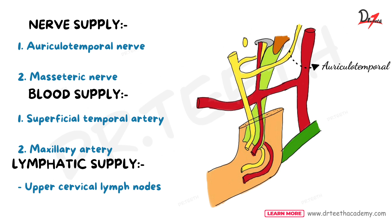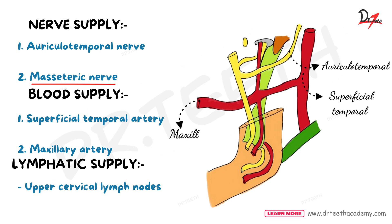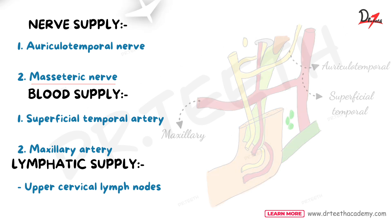Regarding nerve supply, blood supply, and lymphatic supply: the TMJ is supplied by the auriculotemporal nerve and masseteric nerve. It receives branches from the superficial temporal artery and maxillary artery, and it drains into the upper cervical lymph nodes.